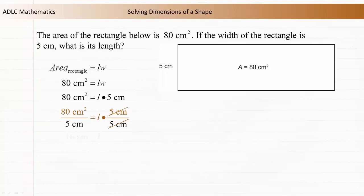The length is multiplied by 5 cm. Undo the multiplication operation by dividing both sides of the equation by 5 cm.